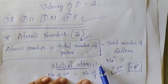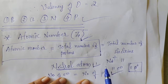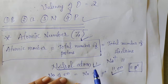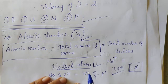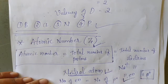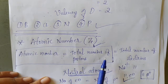A neutral atom will be converted into an ion when it gains or loses electrons. When electrons are lost or gained by a neutral atom, then only a charge will appear on it. Until then, there will be no charge on the neutral atom. So while defining the atomic number, you should remember that atomic number is the total number of protons present inside the nucleus.